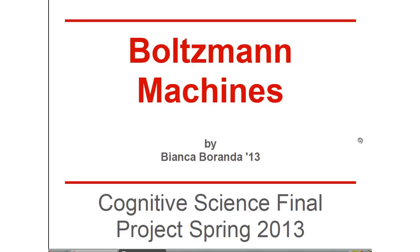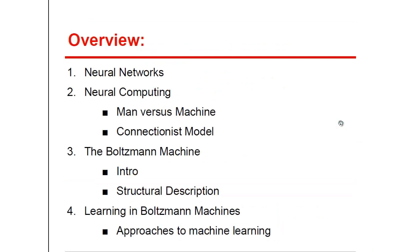My final project for Cognitive Science Spring 2013 course is about Boltzmann machines. Here is a brief overview of what I will cover in this video. First, I'll introduce neural networks, which we already studied in class, but I will describe the general type of neural networks here. Neural computing is an area in computer science, particularly in artificial intelligence.